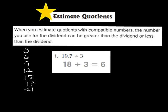So we turn 19 and 7 tenths into 18, and 18 divided by 3 gives us an estimated answer of about 6. When estimating quotients with compatible numbers, the number you use for the dividend — here 19 and 7 tenths — can be greater than or less than the original dividend. In this case, we chose 18, which is less than the given dividend.